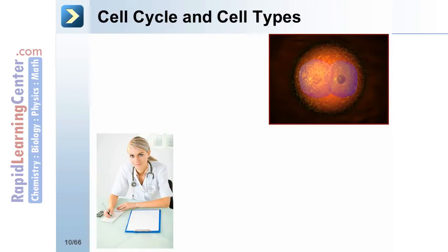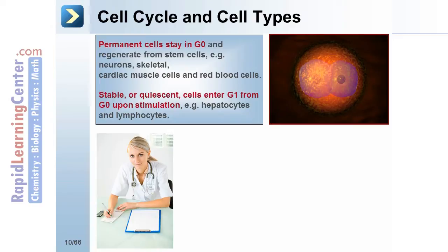Now let's review the phases of the cell cycle relative to types of cells found in the body. Permanent cells stay in G0 and regenerate from stem cells. For example, neurons, skeletal and cardiac muscle cells, and red blood cells are permanent cells. Stable, or quiescent cells enter G1 from G0 upon stimulation. Examples of these types of cells are hepatocytes and lymphocytes.